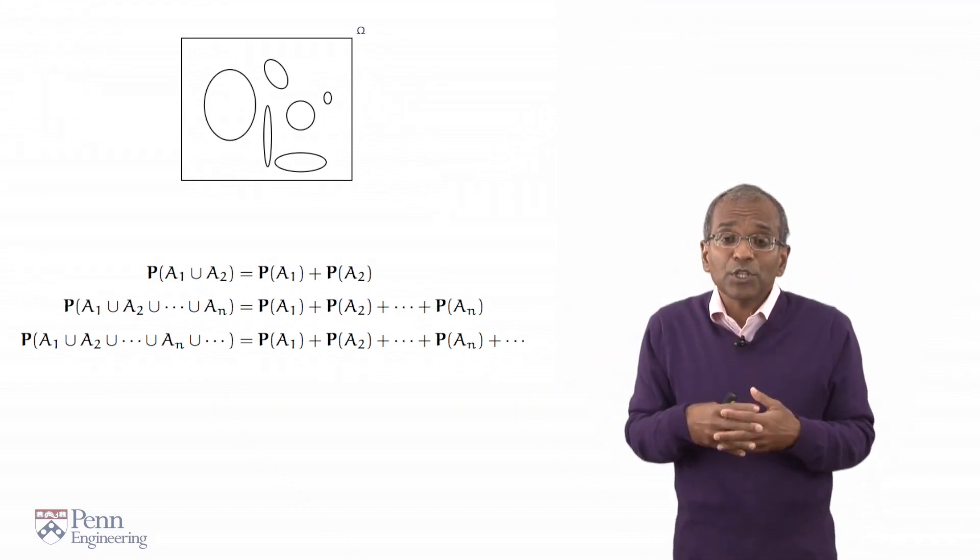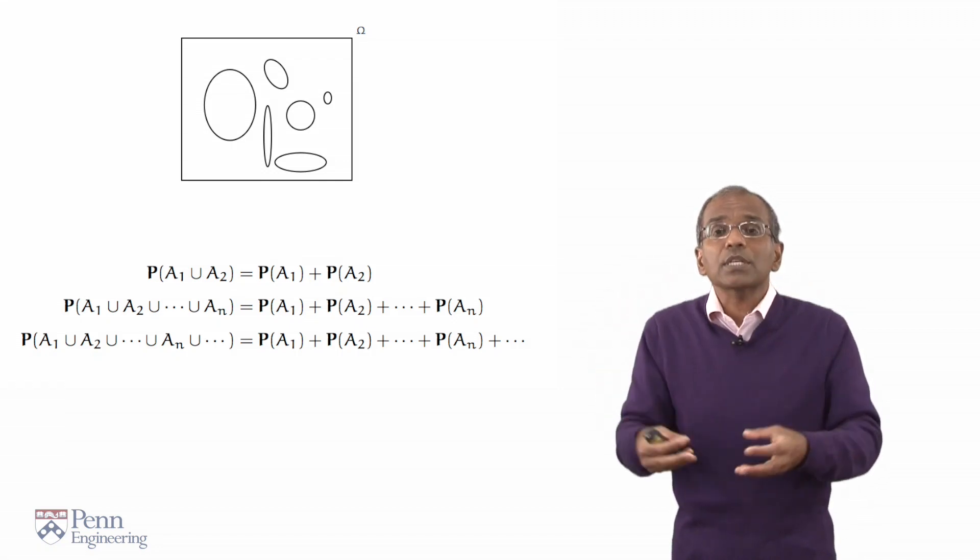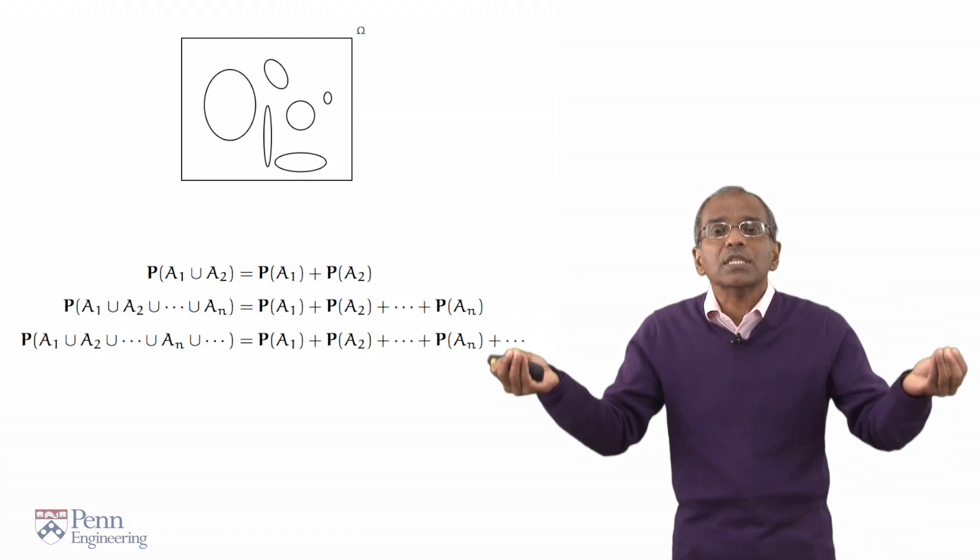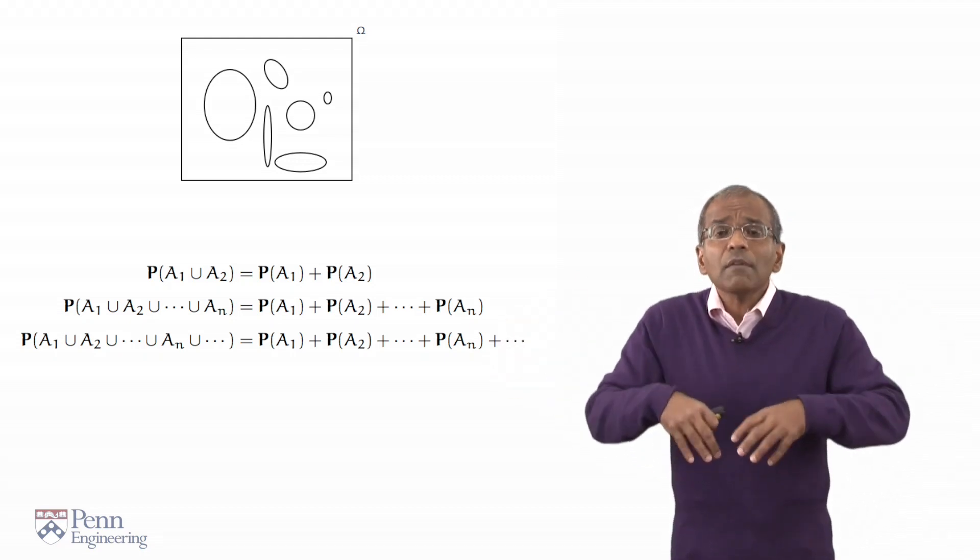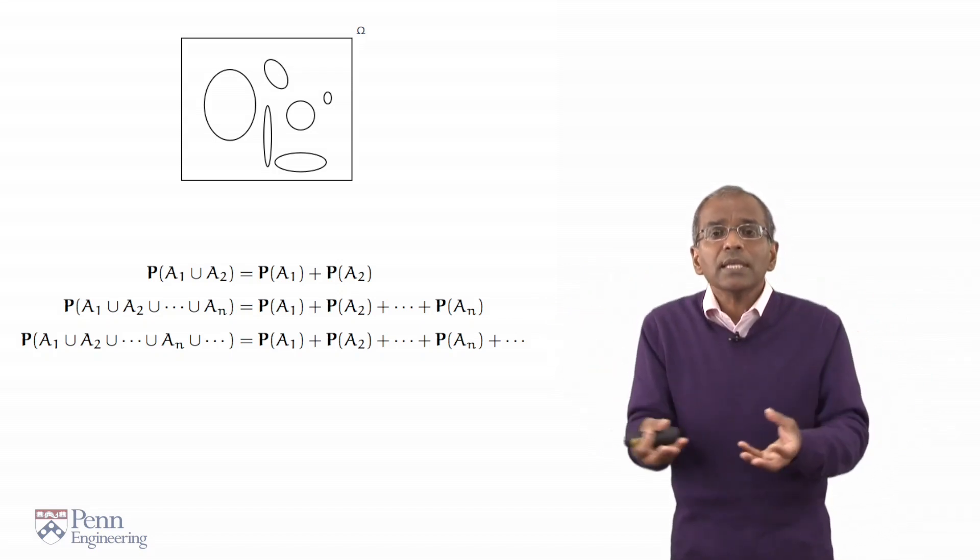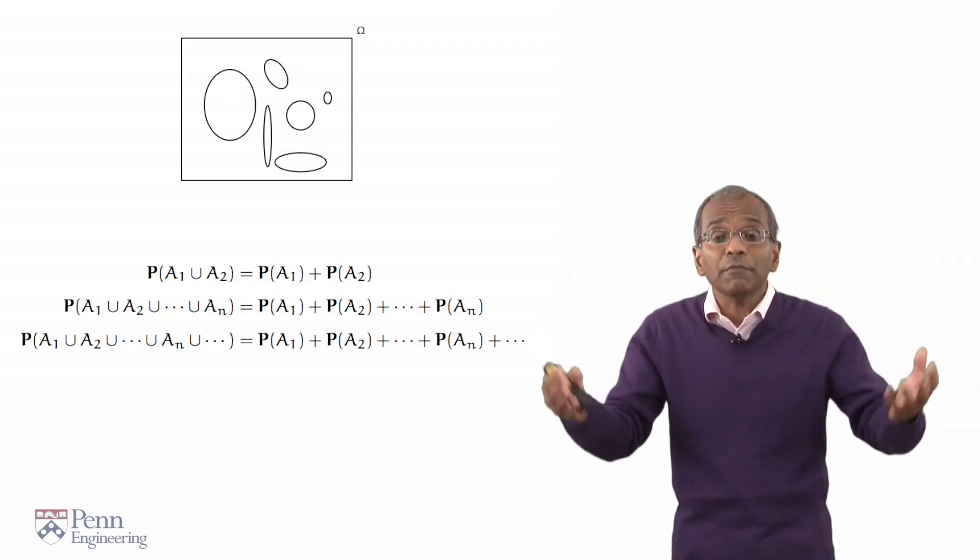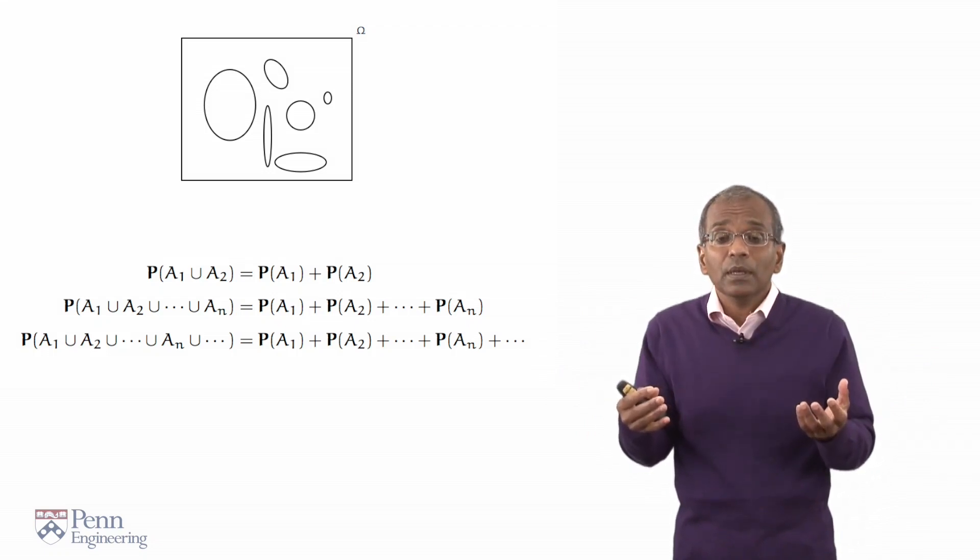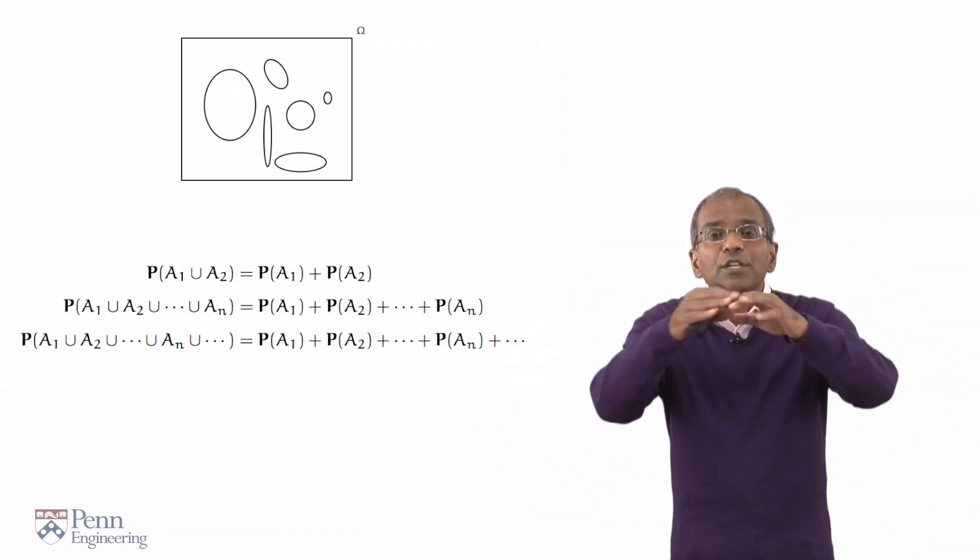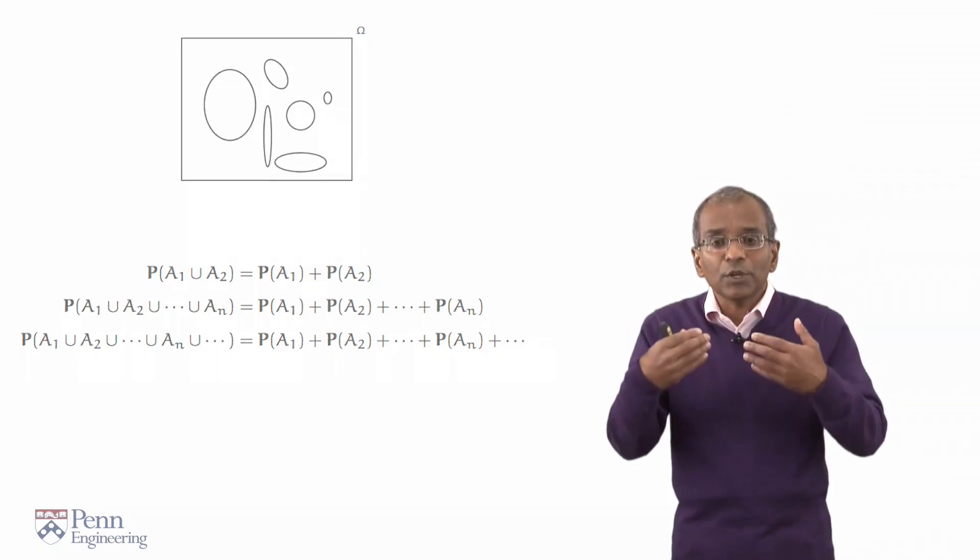You could have a finite number. Let's say two of them. In which case, we are looking at A1 and A2, and the union of A1 and A2 has got a probability which is the sum of the probabilities of A1 and A2. This is what additivity tells us. The whole is equal to the sum of the constituent parts. You could have a finite number, say n disjoint sets. The probability of the union is the sum of those n individual probabilities. You could have a countably infinite number of these A_j's. And they are all disjoint, mutually exclusive. The probability of a countably infinite union of these A_j's is a series, a sum of the individual probabilities.